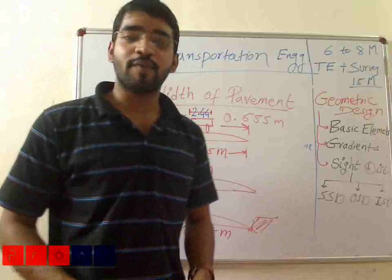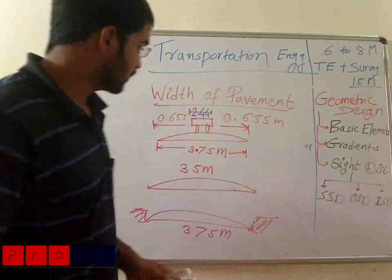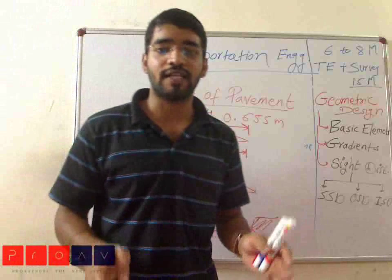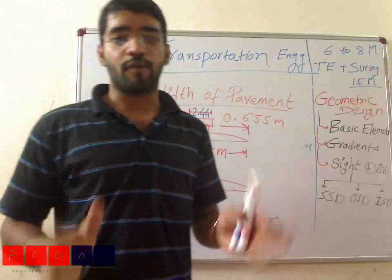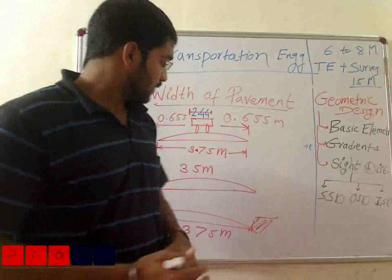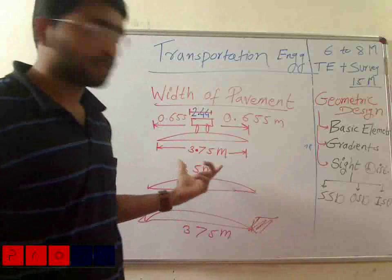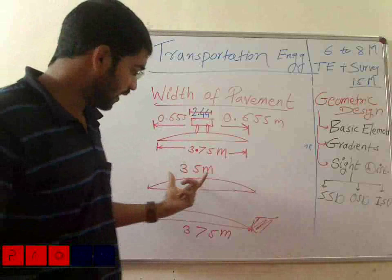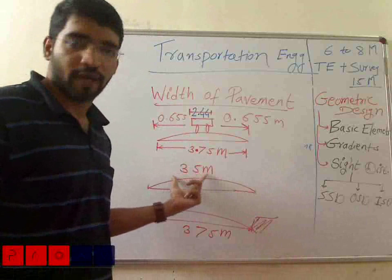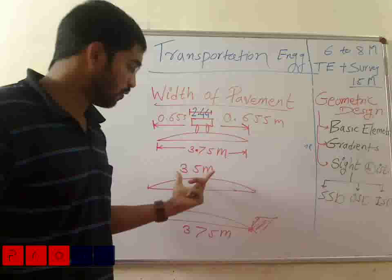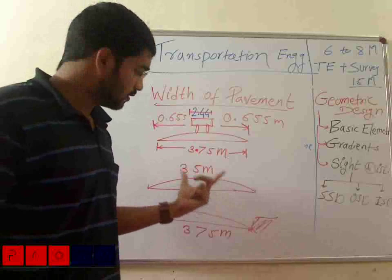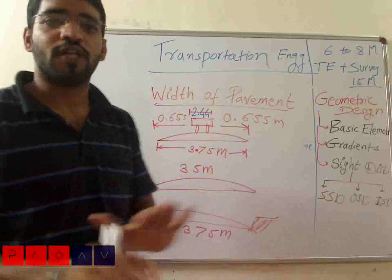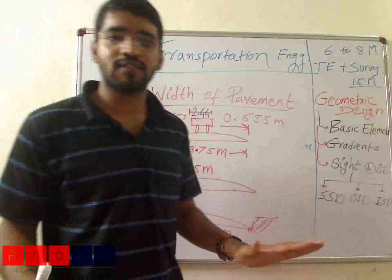There is a concept called an Intermediate Carriageway, which has a width of 5.5 meters. As already said, in case of a multi-lane road, just multiply in terms of 3.5 meters — 3.5 is the standard width — so 3.5 × 2, 3, or 4, whatever number of lanes are given.